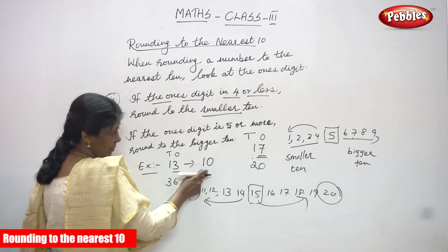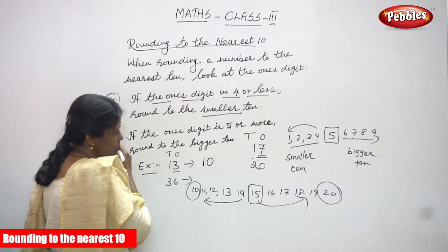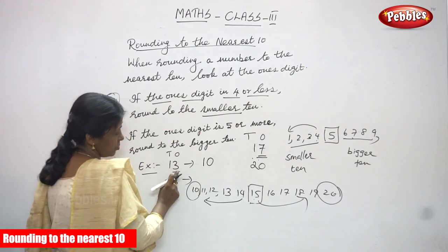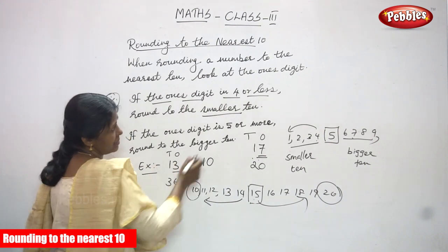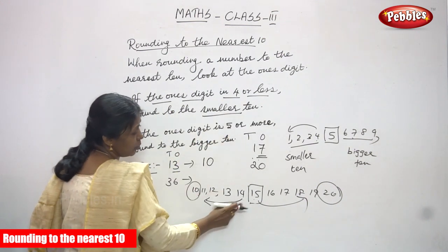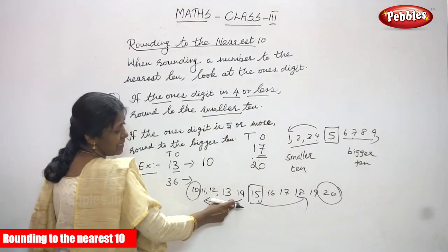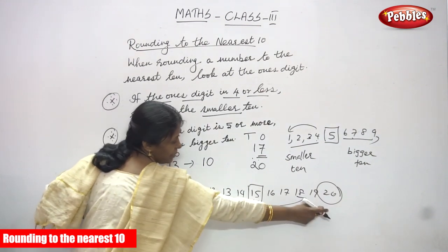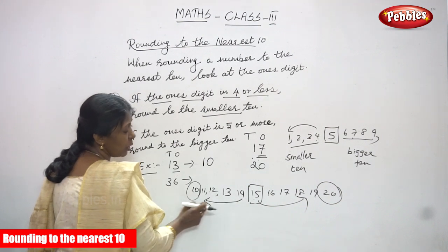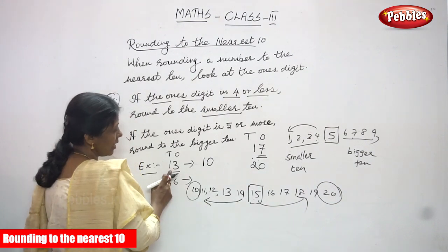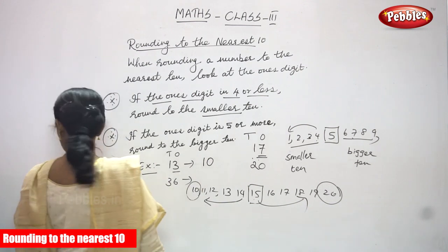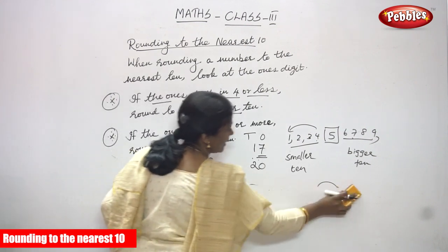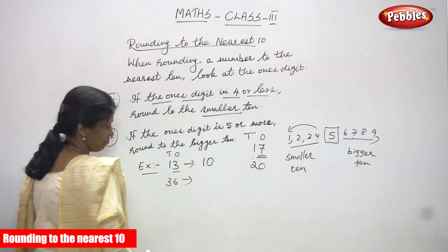In the case of 13, the ones digit is 3, which is 4 or less. The nearest smaller 10 is 10, and the bigger 10 is 20. Since 4 or less means round to the smaller 10, the answer for 13 is 10. I think you understand the concept. I'll explain the next question so you understand better.